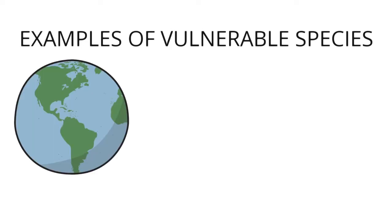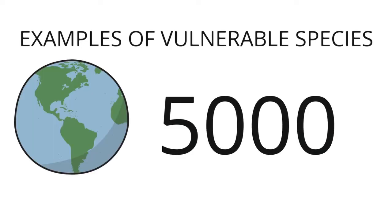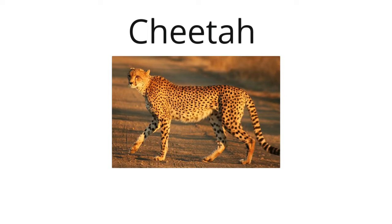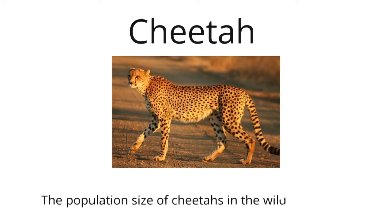Examples of Vulnerable Species. A large number of animal species in the wild are considered vulnerable, due to harmful human activities. Currently, about 5,000 animal species are vulnerable. Cheetah: The cheetah is the world's fastest land animal, going from 0 to 60 miles per hour in just 3 seconds. The population size of cheetahs in the wild is about 7,000. Habitat loss is the biggest threat, and cheetahs are also hunted by humans. 79% of cheetah habitats have fewer than 100 adult cheetahs.